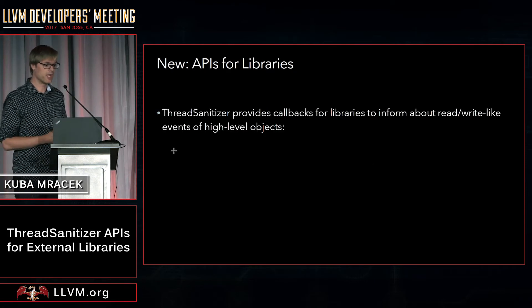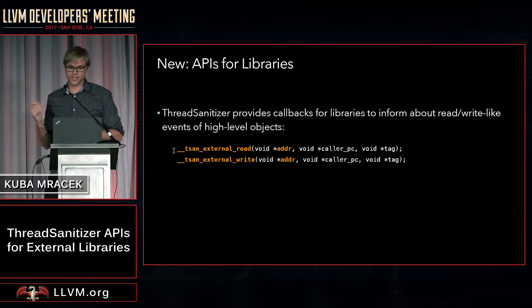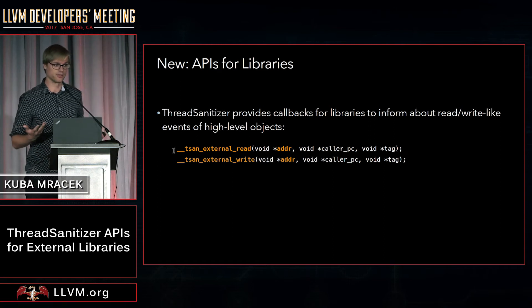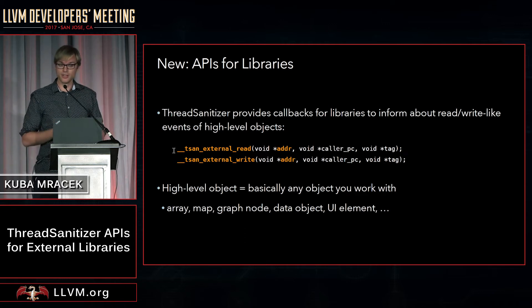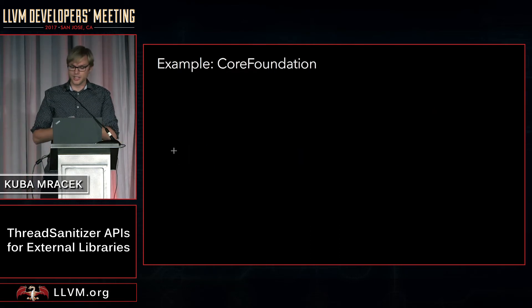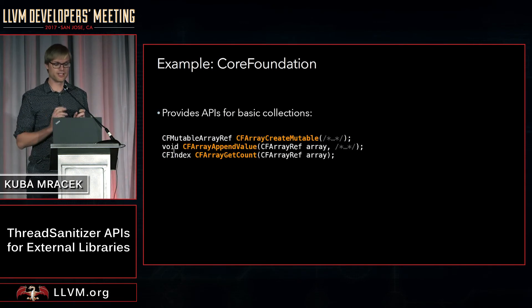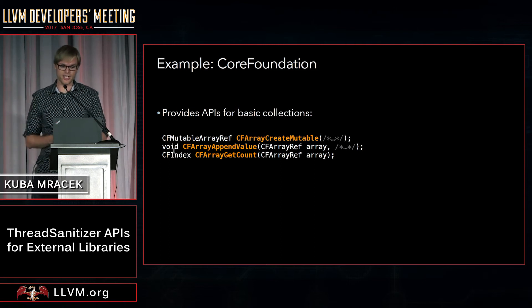ThreadSanitizer now has that — we have two new APIs: tsan_external_read and tsan_external_write. These are callbacks for libraries to inform about reads and writes of high-level objects. You have to provide an address of an object that you want checked for thread safety. By object, I mean any type — arrays, maps, draft nodes, data objects — anything that has an address and you want to check for thread safety. CoreFoundation is a popular library on macOS that provides APIs for many things, including arrays, with APIs to create an array, append a value, or get the number of elements.